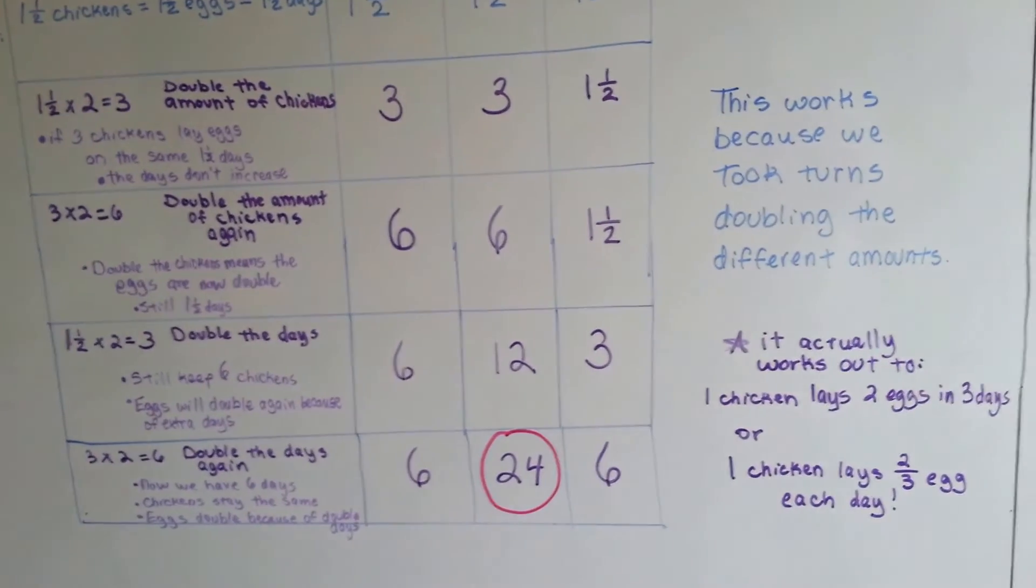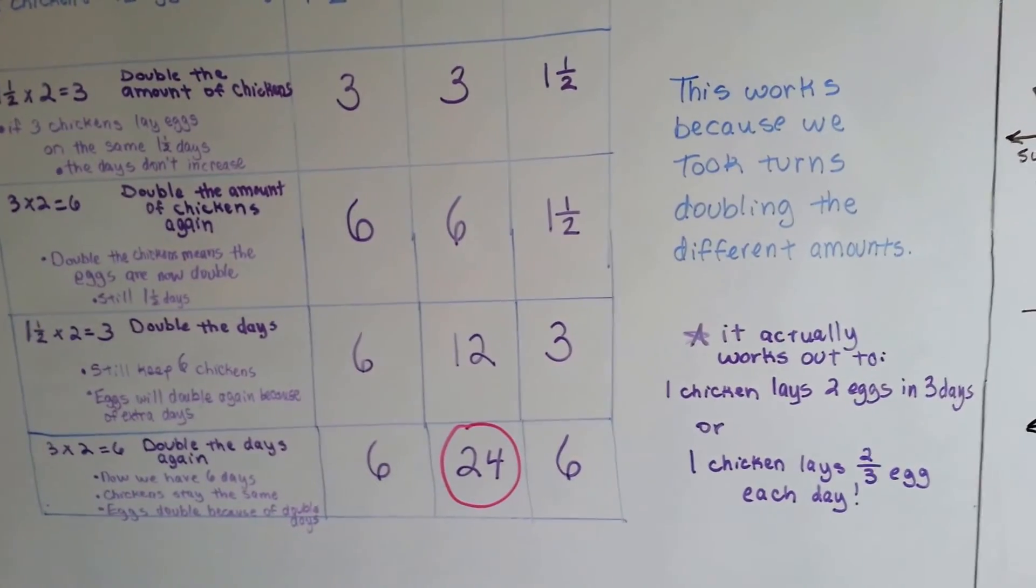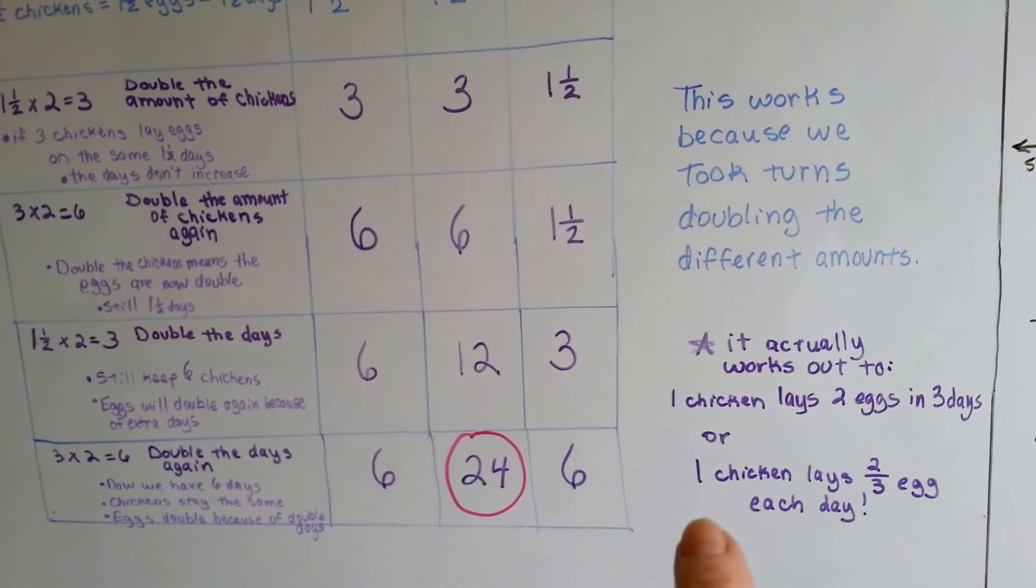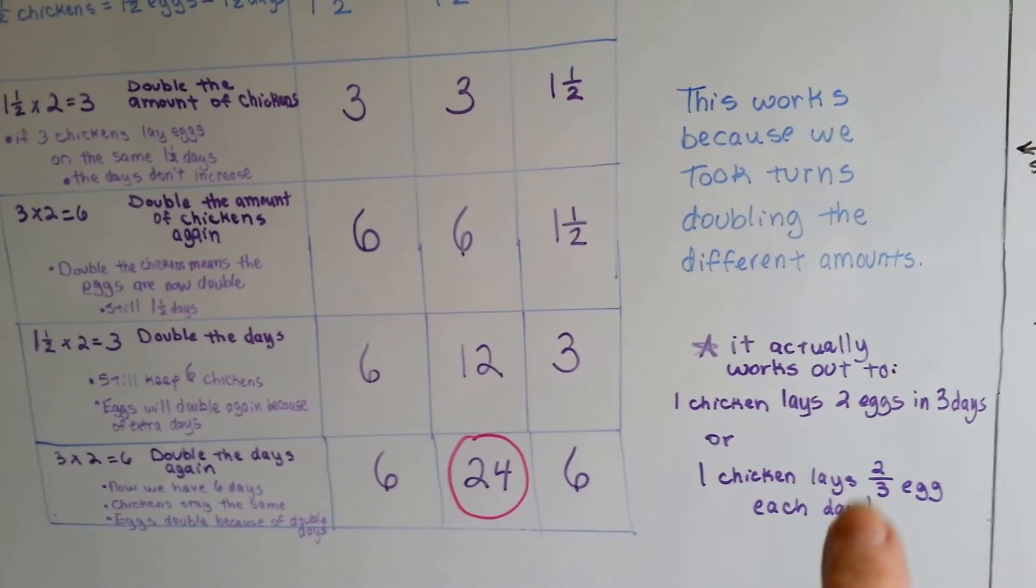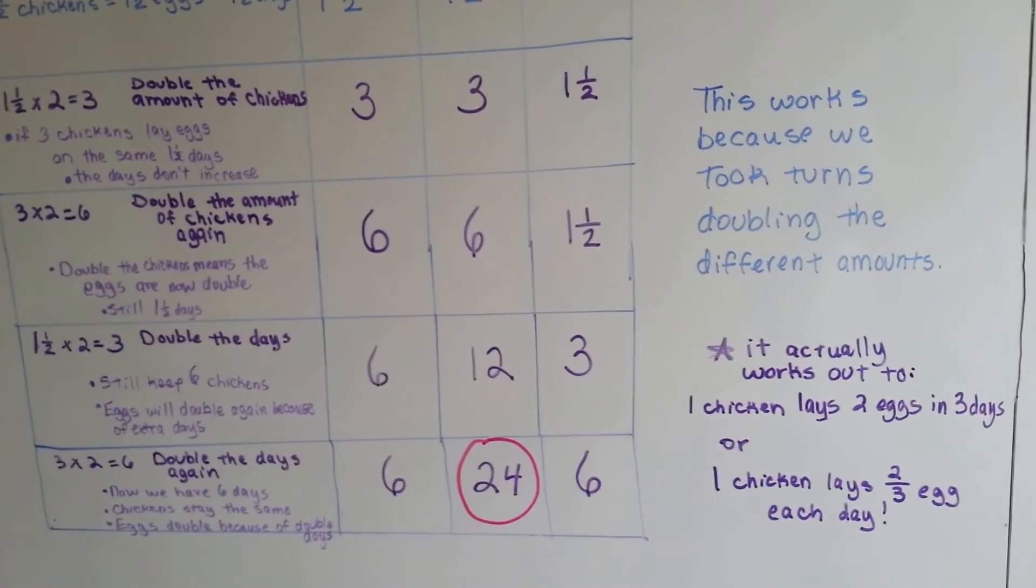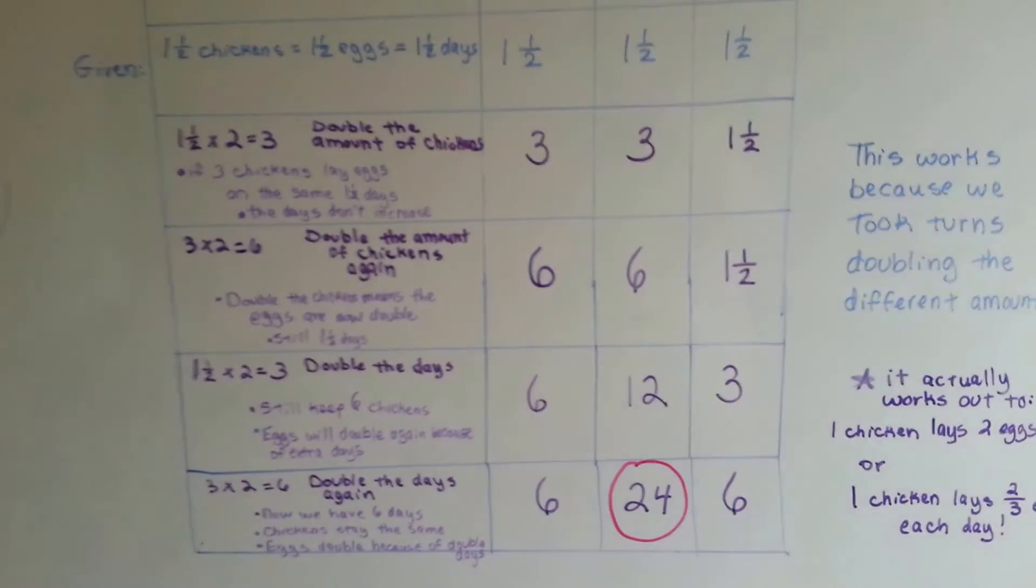It actually works out to one chicken lays two eggs in three days, or one chicken lays two-thirds of an egg each day. Those are fractions.